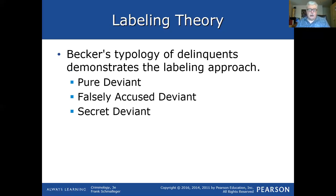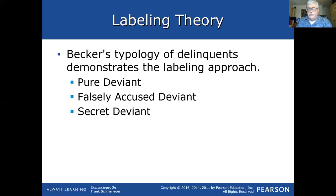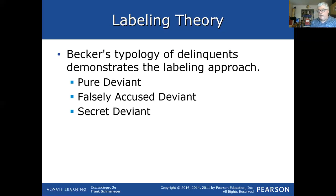The falsely accused deviant is the person who got picked up for a crime they didn't commit. They got charged in the system, and sadly we hear stories about this happening in major cities all over. There are people accused of crimes they didn't do, some recently released, who lost a big portion of their life. Others who were convicted and labeled may come out and start down a criminal path, even though that wasn't what they intended in the first place. That's labeling theory and the falsely accused deviant.